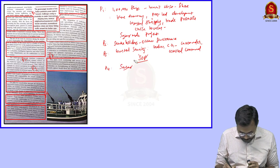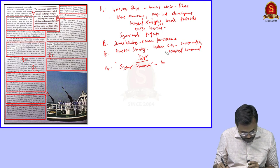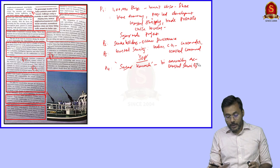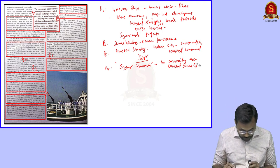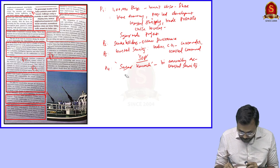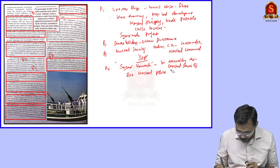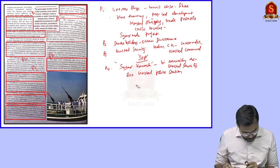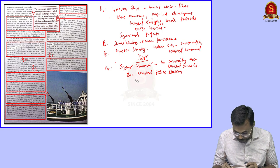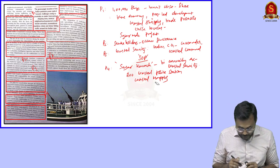In paragraph 4, we have 'Sagar Kavach' — a biannual exercise for coastal security in which the Coast Guard plays a major role. This exercise is conducted once every two years for coastal security. We also have 200 coastal police stations run by state governments. Surveillance in shallow waters and coastal mapping is also being done, clearly showing how the Indian government gives greater focus on coastal security.